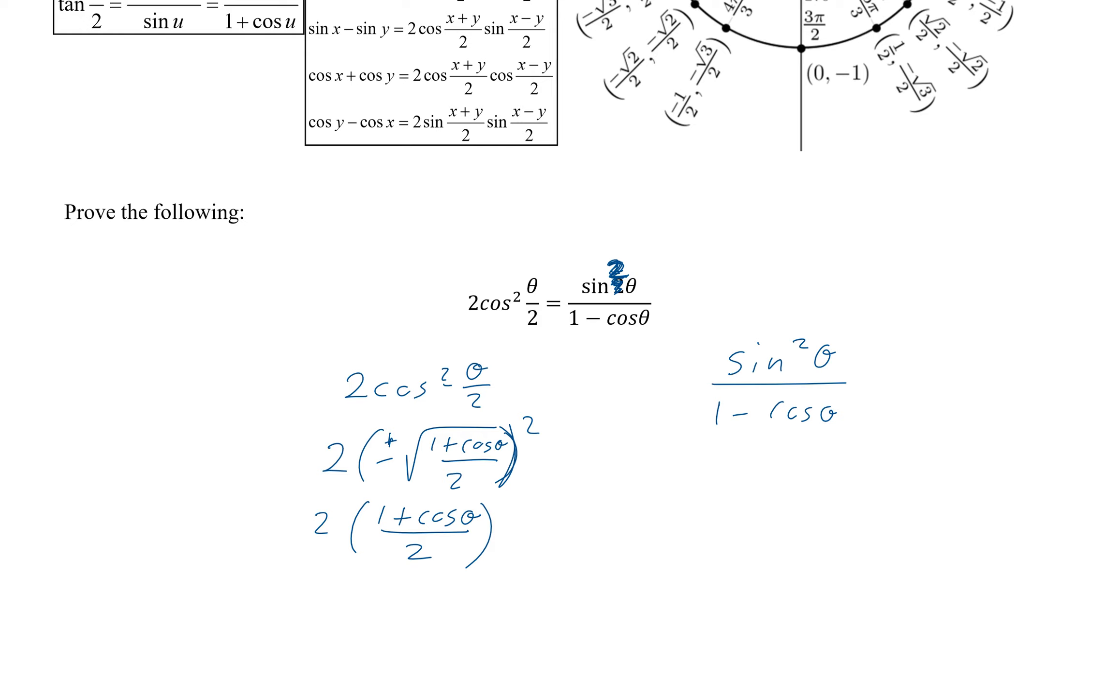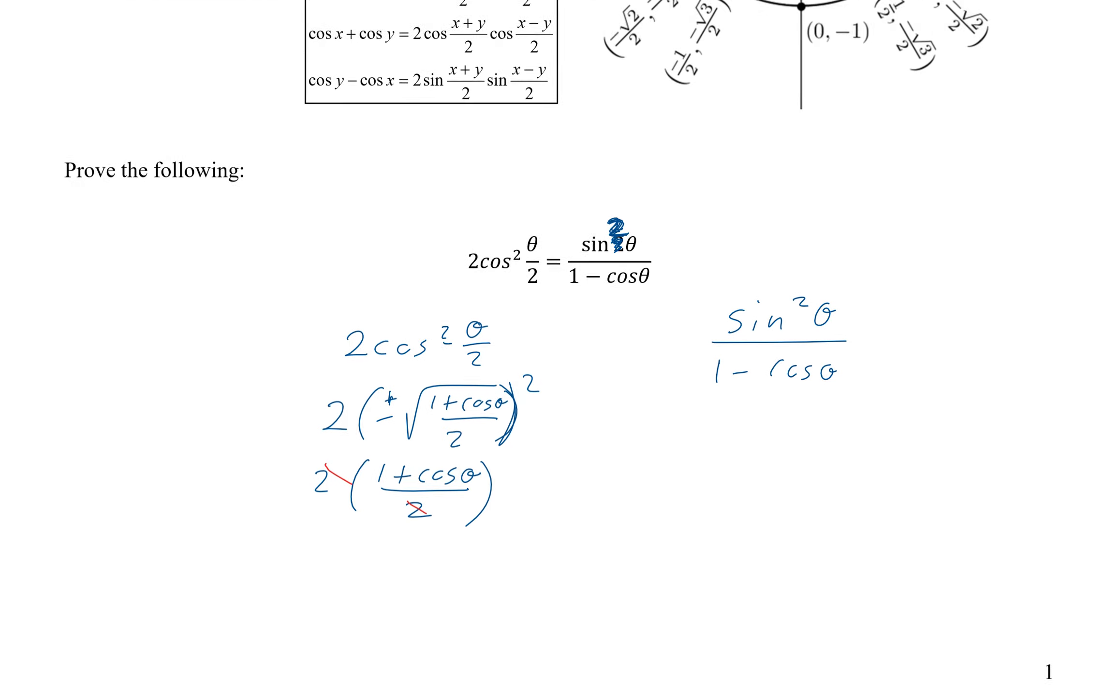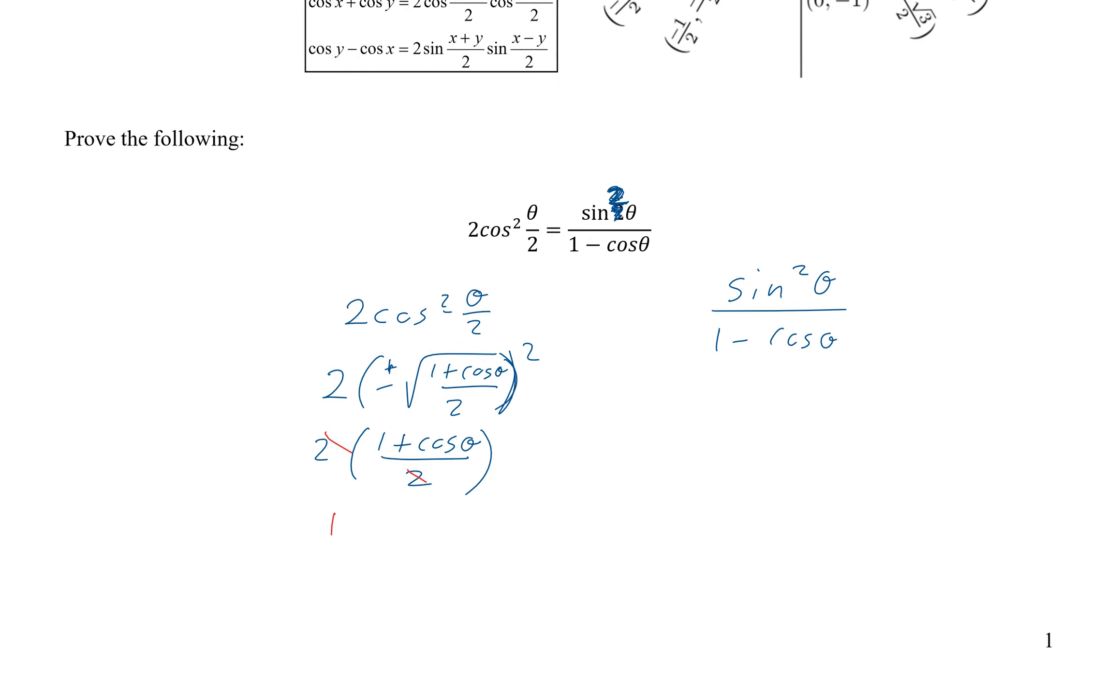But the 2s do cancel. We end up with 1 plus cosine theta. So don't give up. What you want to do now is look at it and see what you need to introduce.